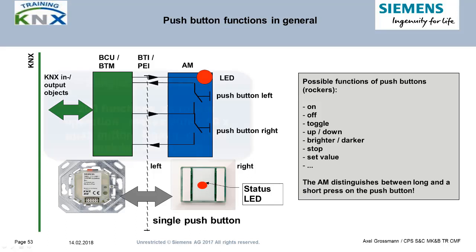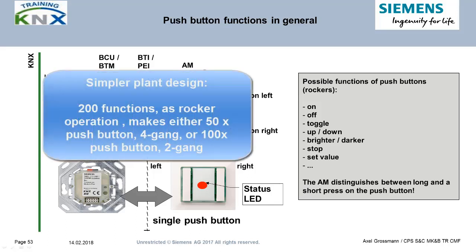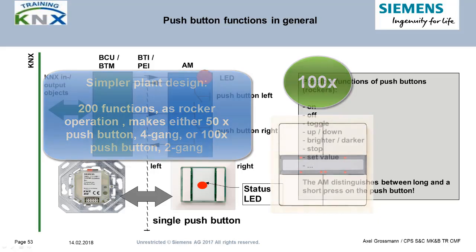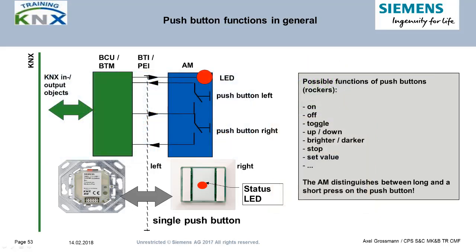KNX push buttons are much more universally usable than their classic siblings, which also means much easier planning. You simply need to summarize all required functions for the room, divide by the number of buttons or rockers of one device, and that gives you the number of devices needed. No distinction for types of switches such as interrupting, changeover, or crossover switch, dimmer, or blind switch is necessary anymore.